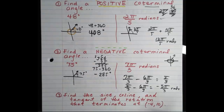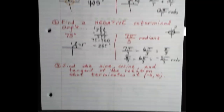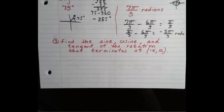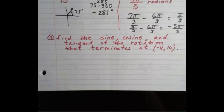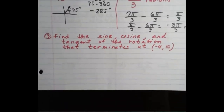Remember, sometimes subtracting 2π once is not enough — maybe we have to do it a couple of times. Moving on, here's number 3 in the warm-up. Read it, draw it, pause the video, and find the sine, cosine, and tangent.